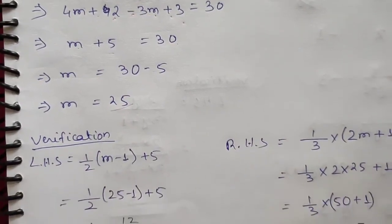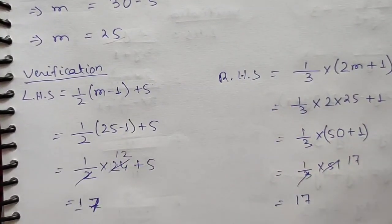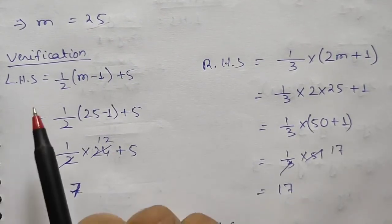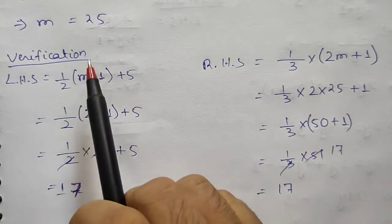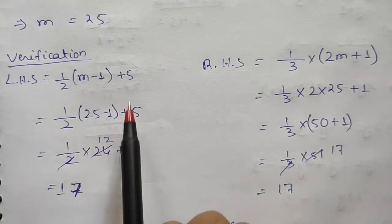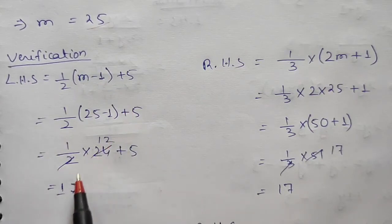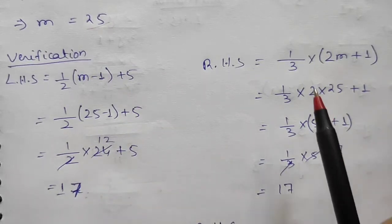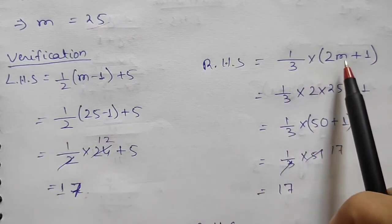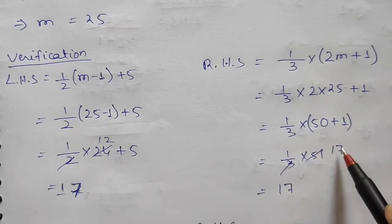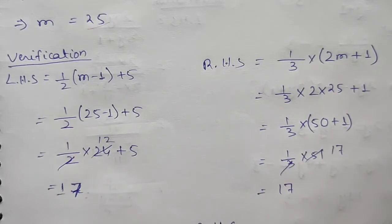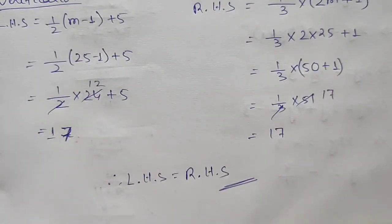Verification for question 5 with m = 25: LHS = 1/2 × (25 - 1) + 5 = 1/2 × 24 + 5 = 12 + 5 = 17. RHS = 1/3 × (2×25 + 1) = 1/3 × 51 = 17. LHS = RHS = 17, so m = 25 is verified.